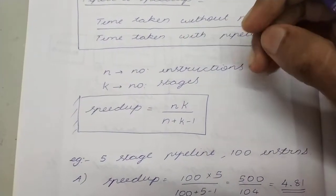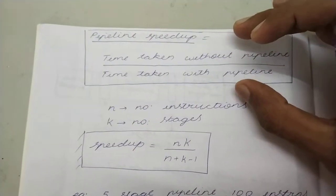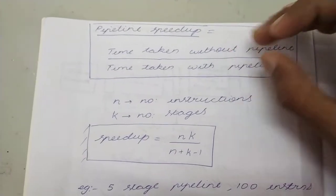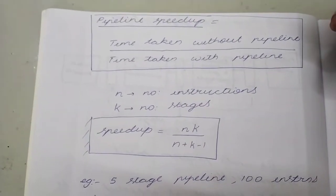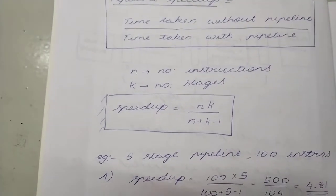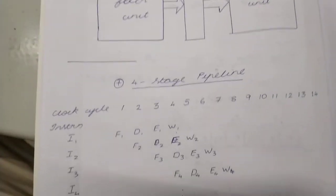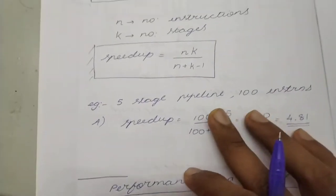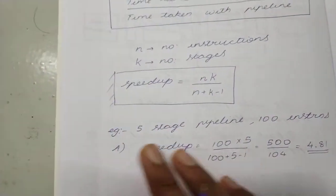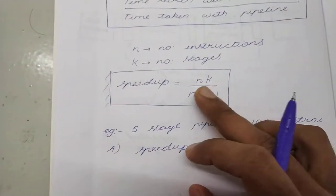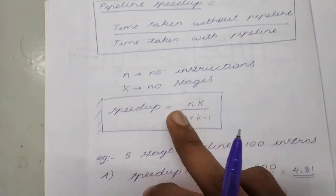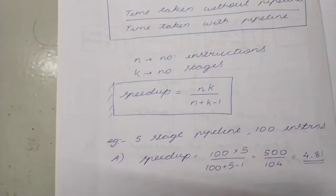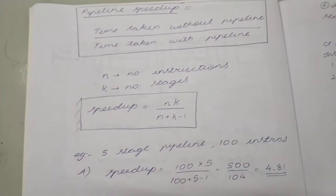Let n be the number of instructions and k be the number of stages in the pipeline. So for a 4-stage pipeline, k will be 4, and for a 5-stage, k will be 5. The speedup is n into k, that is time taken without pipeline, by n plus k minus 1, that is time taken with pipeline.